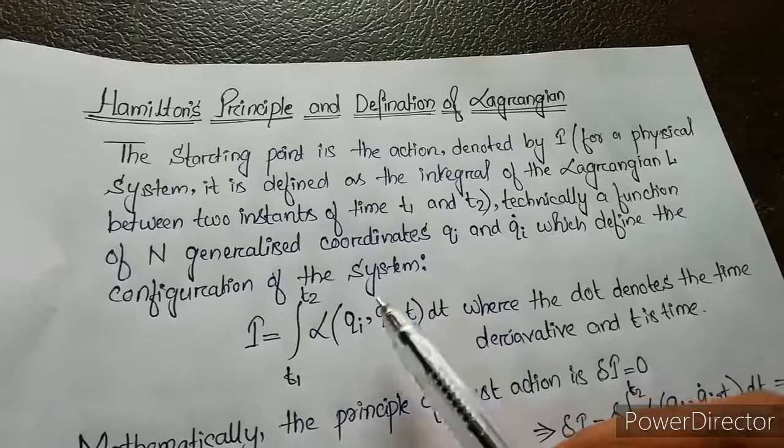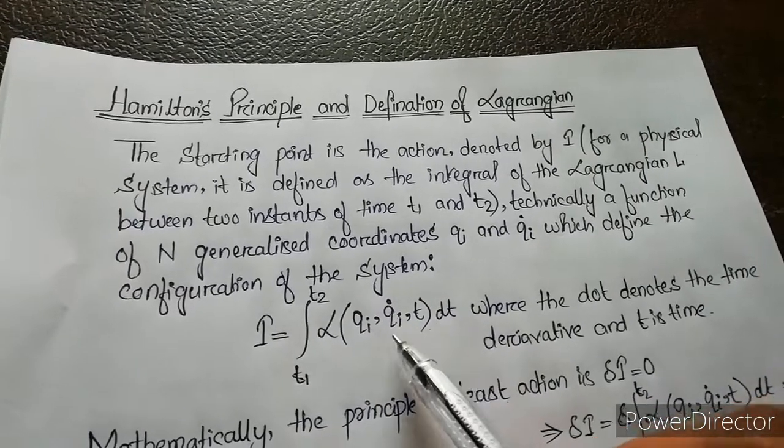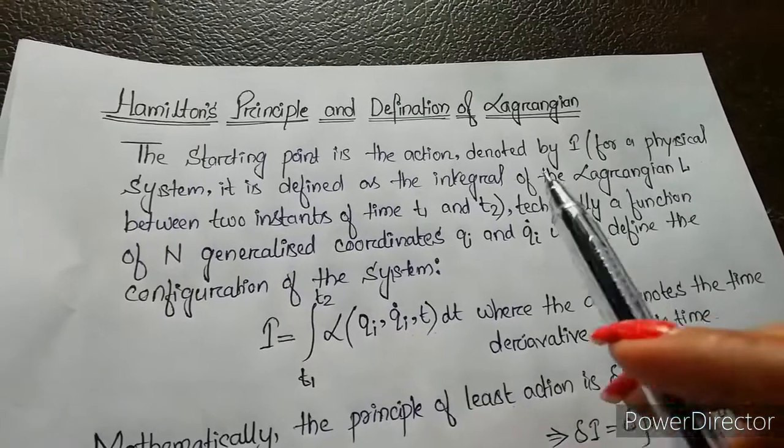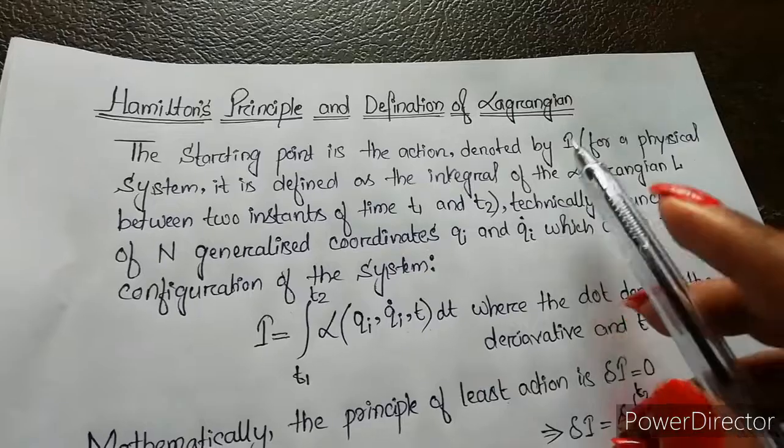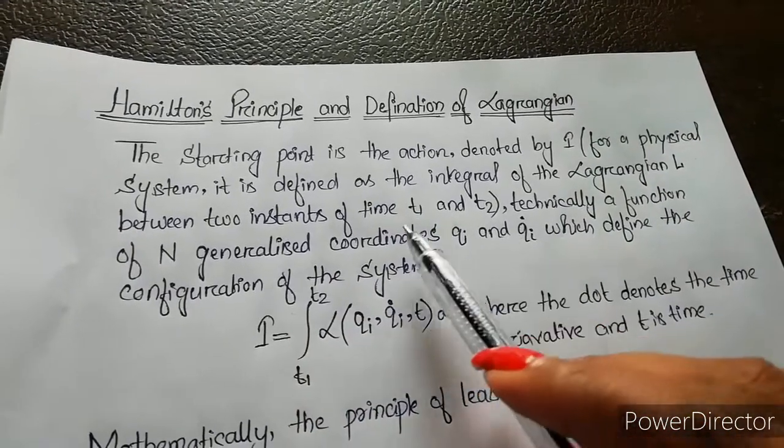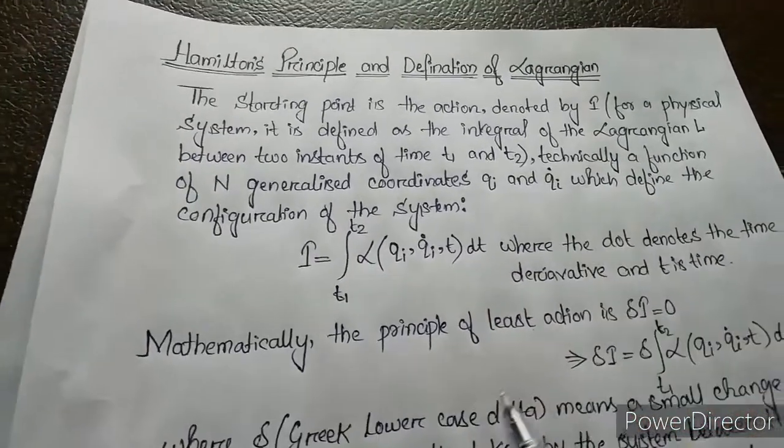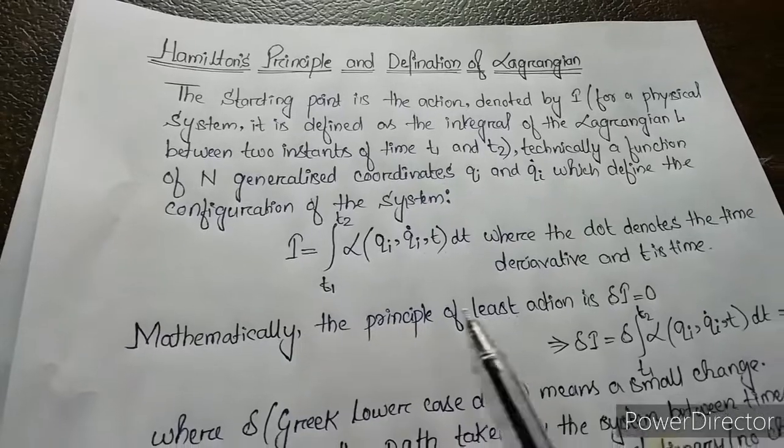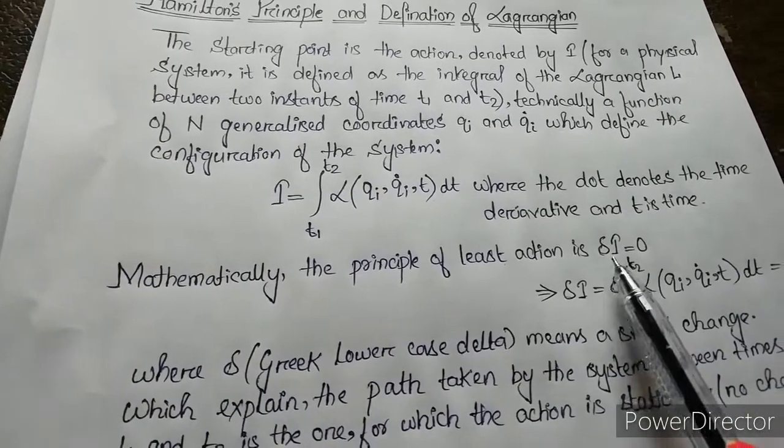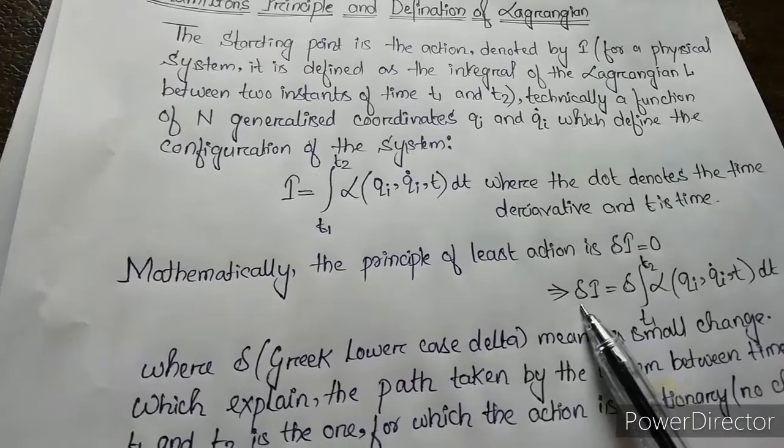The Lagrangian is a function of qi, qi dot, and t, where qi is the generalized coordinate, qi dot is the generalized velocity, and t is the time. The action is denoted by I, but technically, action is a function of n generalized coordinates which define the configuration of the system. Mathematically, the principle of least action is written as delta I equals zero.